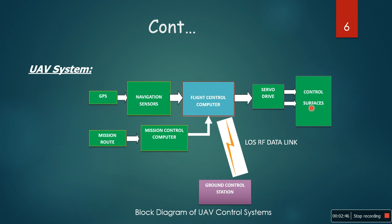The servo drives and control surfaces are shown here. Control surfaces include the ailerons, rudders, and flaps of the UAV. Here is the mission route that is already fed to the mission control computer. It has pre-installed route information, and the flight control computer gets guidance from this route. The sensors provide real-time navigation information so the flight control computer ensures the UAV follows the designated path.